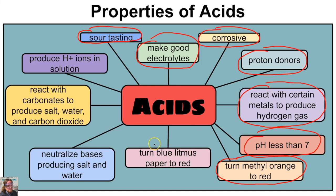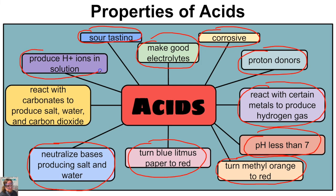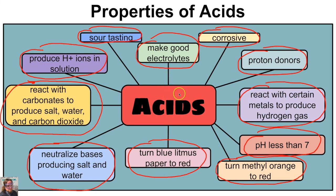Acids will turn an indicator called methyl orange to red, and we'll talk about that later in this unit. Acids will also turn blue litmus paper to red. Acids neutralize bases, producing salt and water. According to the Arrhenius model, acids produce H⁺ ions when dissolved in solution. Last but not least, acids react with carbonates to produce salt, water, and carbon dioxide.